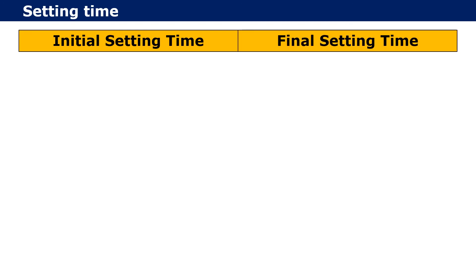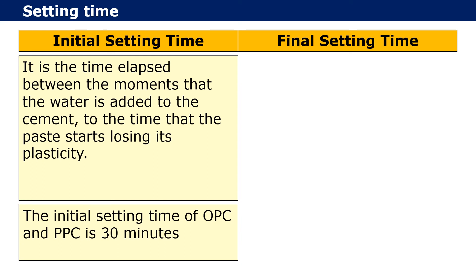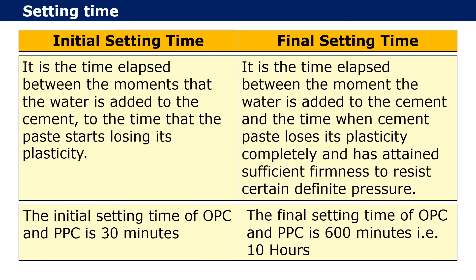Now let us discuss setting time. Initial setting time gives an idea of how fast cement starts losing its plasticity, and final setting time gives an idea of how much time cement takes to lose its full plasticity and gain some strength to resist pressure. Initial setting time is the time elapsed between when water is added to the cement and when the paste starts losing its plasticity. Final setting time is the time elapsed between when water is added and when the cement paste loses its plasticity completely and has attained sufficient firmness to resist a certain definite pressure.